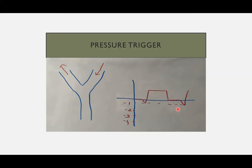Pressure trigger: a pressure-triggered breath is initiated and delivered by the ventilator when it senses the patient's spontaneous inspiratory effort. This is the ventilatory circuit. There is the inspiratory limb and the expiratory limb. Air will enter when the ventilator is delivering or the patient is breathing, going into the patient's lungs, and the expiratory air will come out through the expiratory limb.